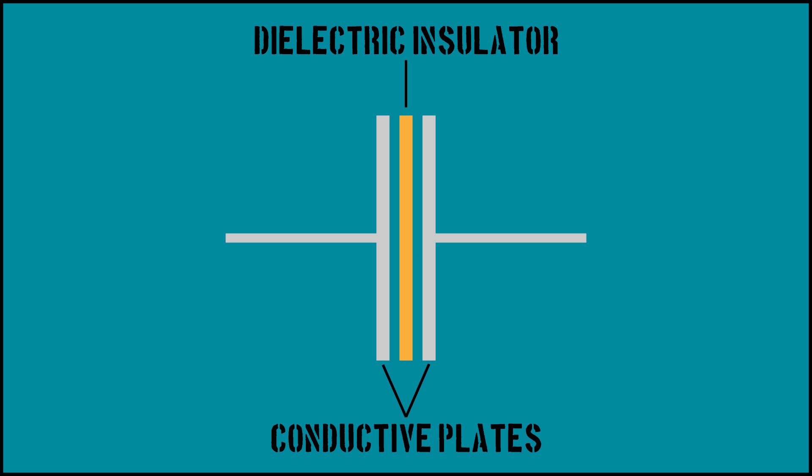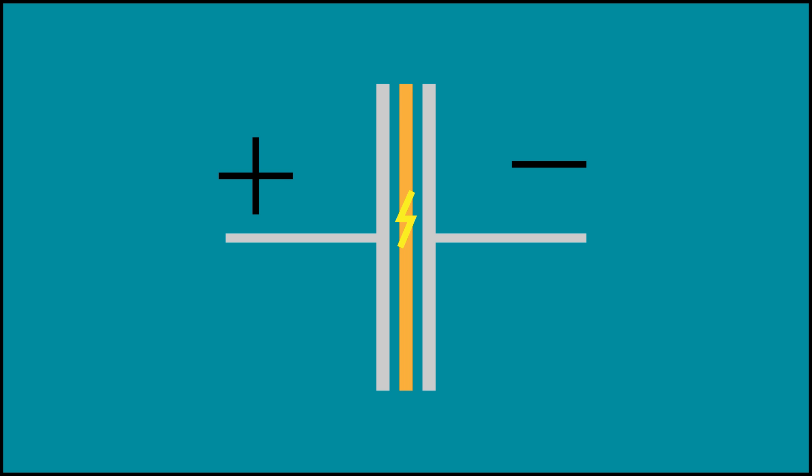A capacitor consists of two conductors with an insulator dielectric separating them. The conductors have equal and opposite charges on them, creating a potential difference. Capacitance can be changed by altering the surface area of the conductive material and the thickness of the dielectric.